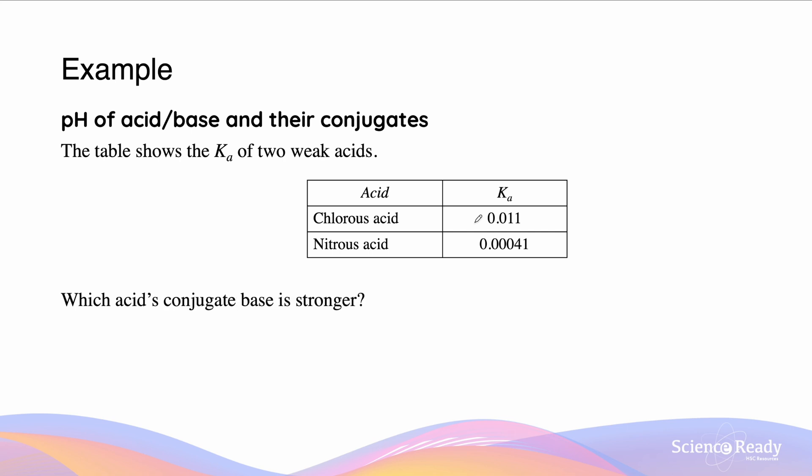In this one, it says which of the acid's conjugate base is stronger. So we know that Ka times Kb has a particular relationship. It equals to Kw. This means that as we increase the base's strength, we decrease the acid's strength. This means that the weaker acid is going to have a stronger conjugate base, and a stronger acid is going to have a weaker conjugate base. So the weaker acid is nitrous acid. This means nitrous acid is going to produce a conjugate base which is stronger than that of chlorous acid.